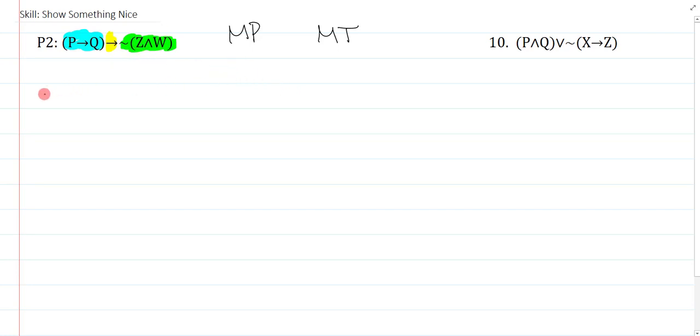So at this point, I'm just going to pretend I'm at line 10 in my derivation. What I could do is I could show something nice. And showing something nice essentially means showing something that would facilitate the use of an elimination rule. So in this case, I could show something to facilitate the modus ponens, or I could show something to facilitate the modus tollens.